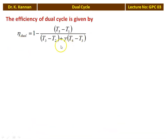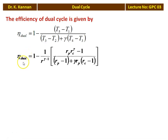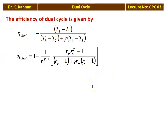Substituting all temperatures T2, T3, T4, T5 in terms of T1 into the efficiency equation and simplifying, we get the efficiency of the dual cycle: η = 1 − [1 / R^(γ−1)] · [(Rₚ · Rᶜ^γ − 1) / ((Rₚ − 1) + γ · Rₚ · (Rᶜ − 1))]. This efficiency derivation is important — you should work it out and try to derive it yourself.